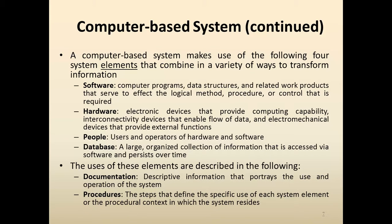Computer-based systems make use of four system elements that combine in a variety of ways to transfer information. These elements are software, hardware, people, and database. Software means computer programs, data structures, and related work products that serve to affect the logical method, procedure, or control required. Hardware means electronic devices that provide computing capability, interconnectivity devices that enable flow of work, and electromechanical devices that provide external functions. People includes users and operators of hardware and software. Database means a large organized collection of information accessed via software that persists over time.